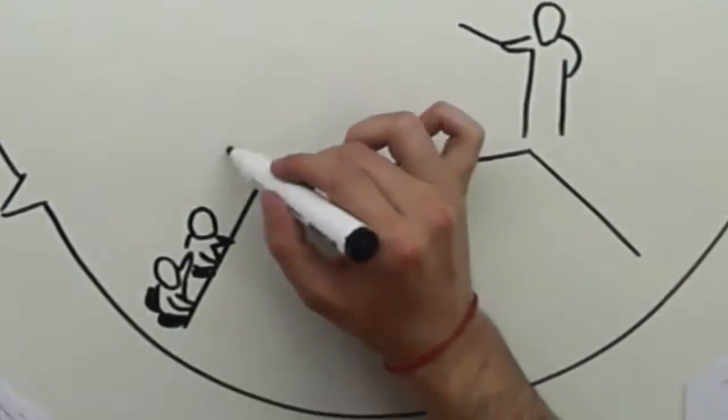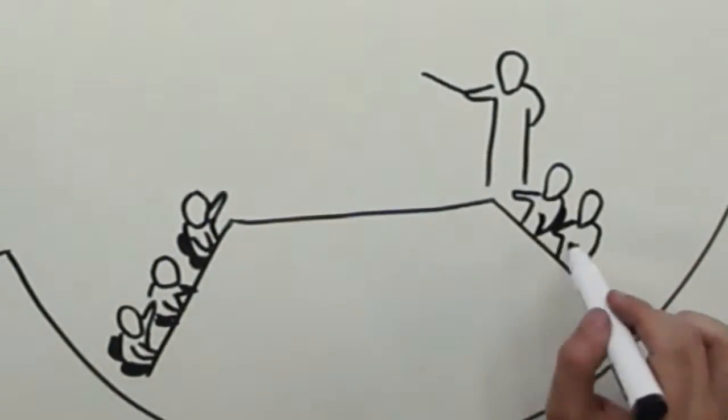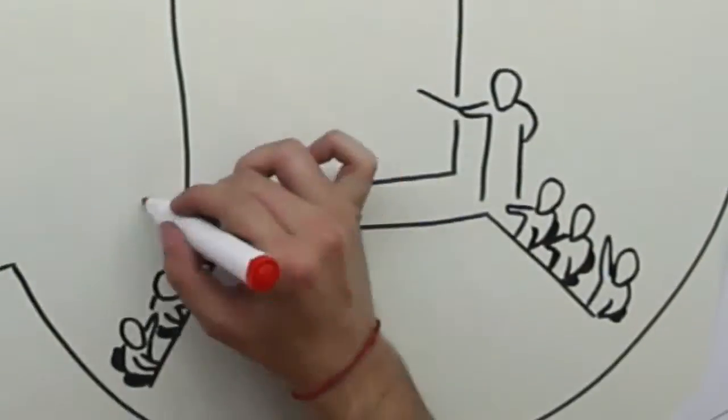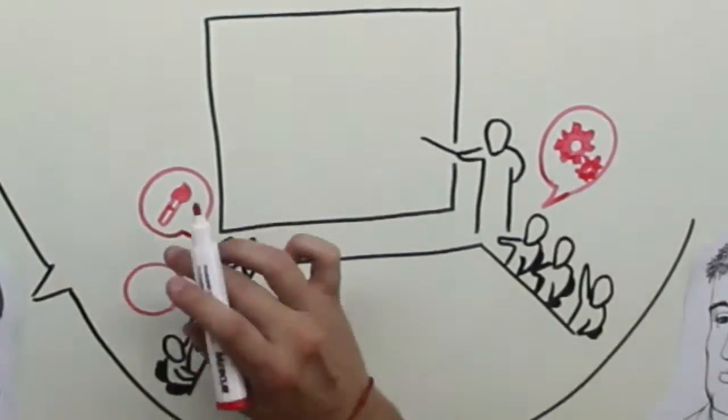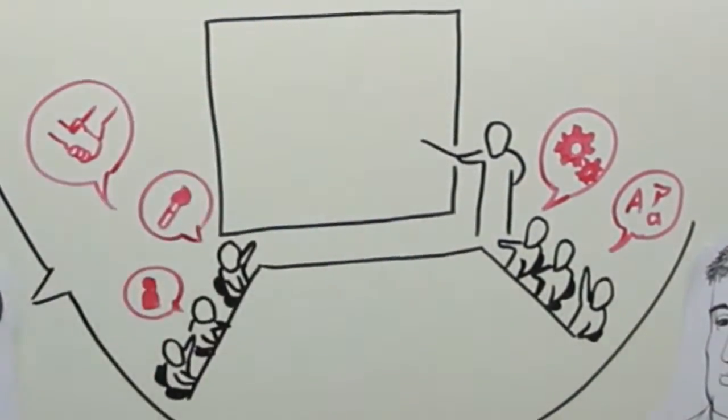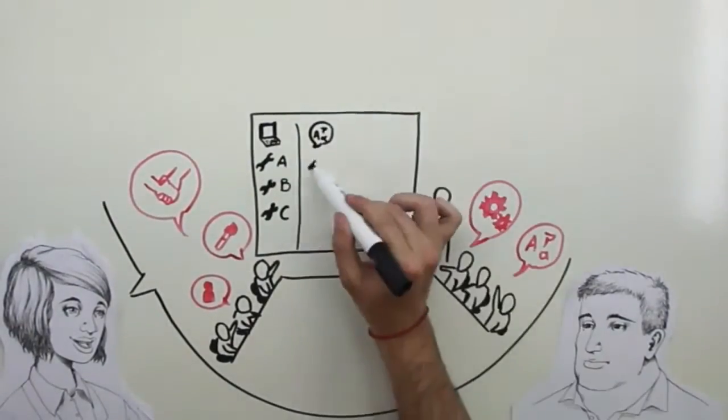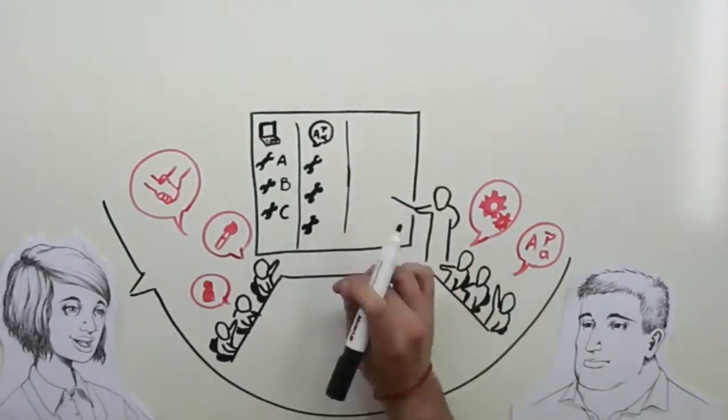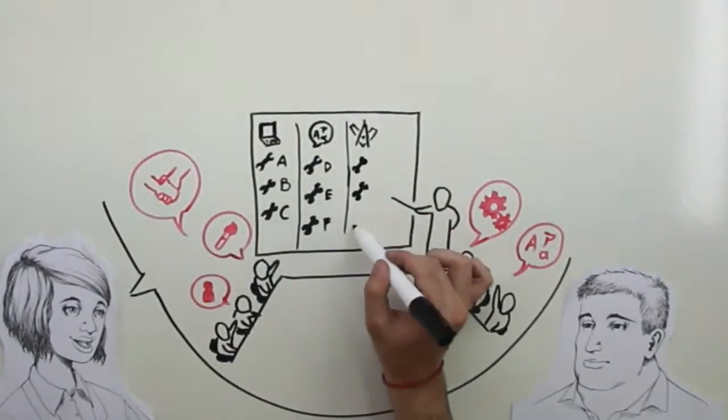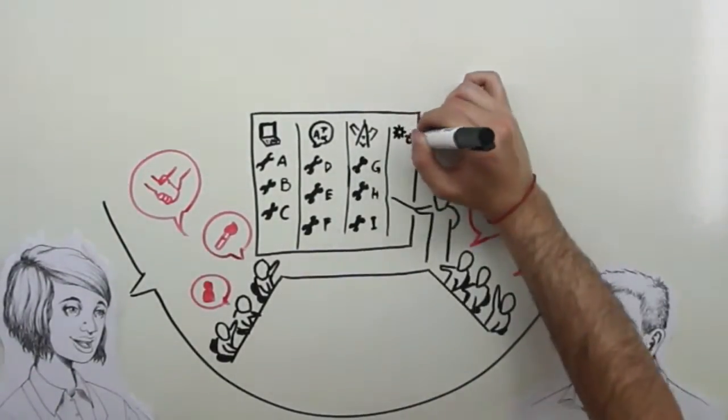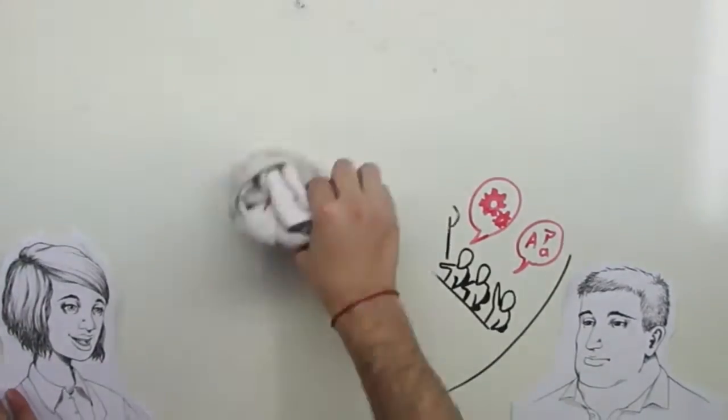In the first step, try to identify the competencies that your employees apply on a daily basis. I choose to do so through brainstorming on a blackboard. Then, you can group certain competencies into categories, such as for example manufacturing process technology, language, design, and social skills.